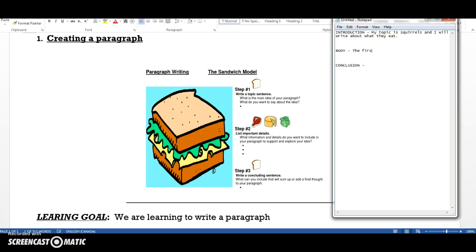The first thing they eat is acorns. They take them from oak trees and store them in their mouth until they get back to their home.